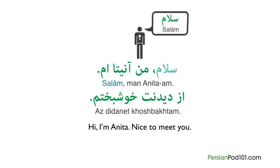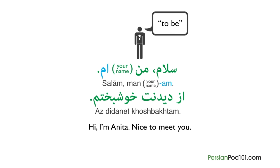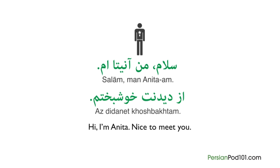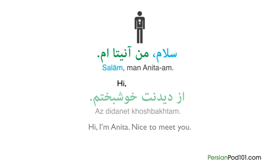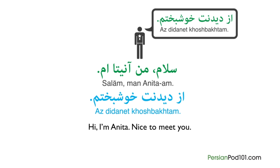Start by saying 'Salaam,' which means hi. Then say 'man' meaning I, your name, and then 'am,' which means to be or am. Persian word order is different than English — word for word, this literally means: hi, I, Anita, am. Finally, say 'az didanet khushbaktam,' which means nice to meet you.